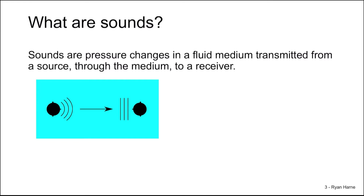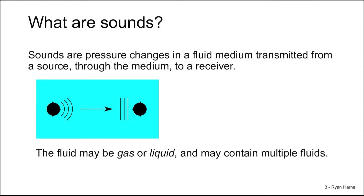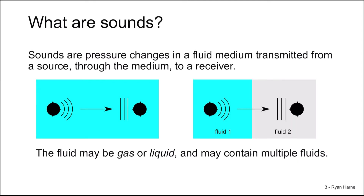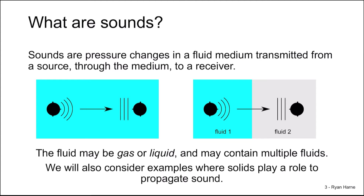A source generates pressure changes, they propagate through the fluid, and are received by the receiver. The fluid in this case may be a gas or liquid, or may even contain multiple fluids with an interface in between them. In special cases in this course, we'll consider sound propagation through solids, but mostly focus on gases and liquids.